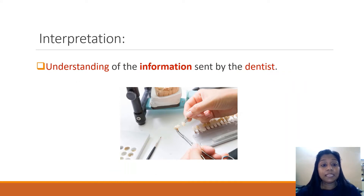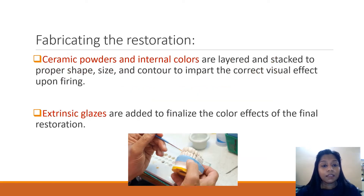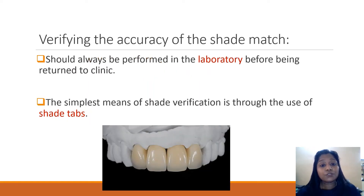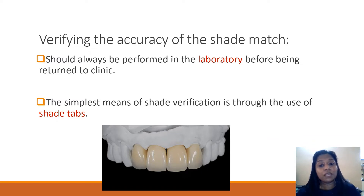The next step is interpretation. Whatever we have written in the lab form is understood by the laboratory technician, who will then fabricate the restoration according to the shades given. Different types of intrinsic colors are used — the ceramic powder itself has its own intrinsic colors — and extrinsic glazes can also be added to finalize the restoration. Just before sending it to the clinic, the laboratory technician must ensure that the result perfectly matches the shade tab that was sent to them.